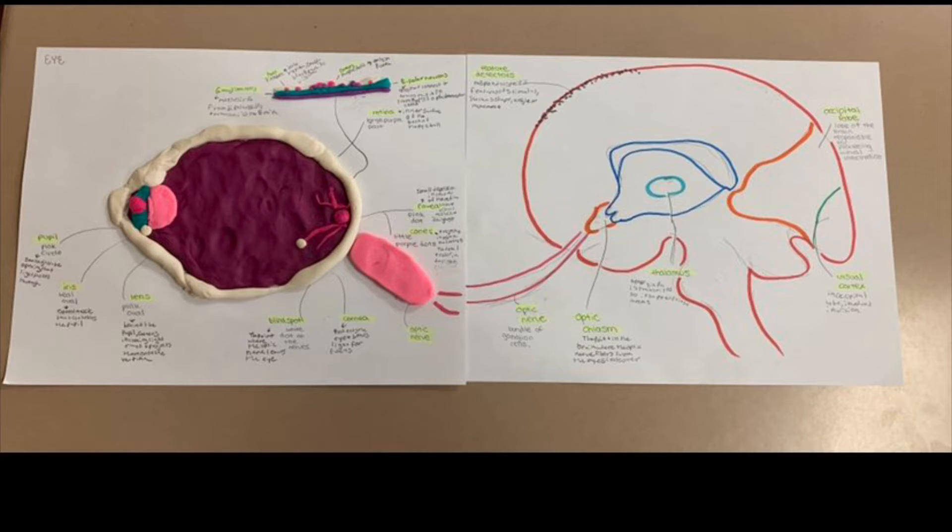Next is the lens, which focuses and projects light rays onto the retina. The lens goes through the process of accommodation, where the eye lens changes and bends to focus on objects near or far on the retina.